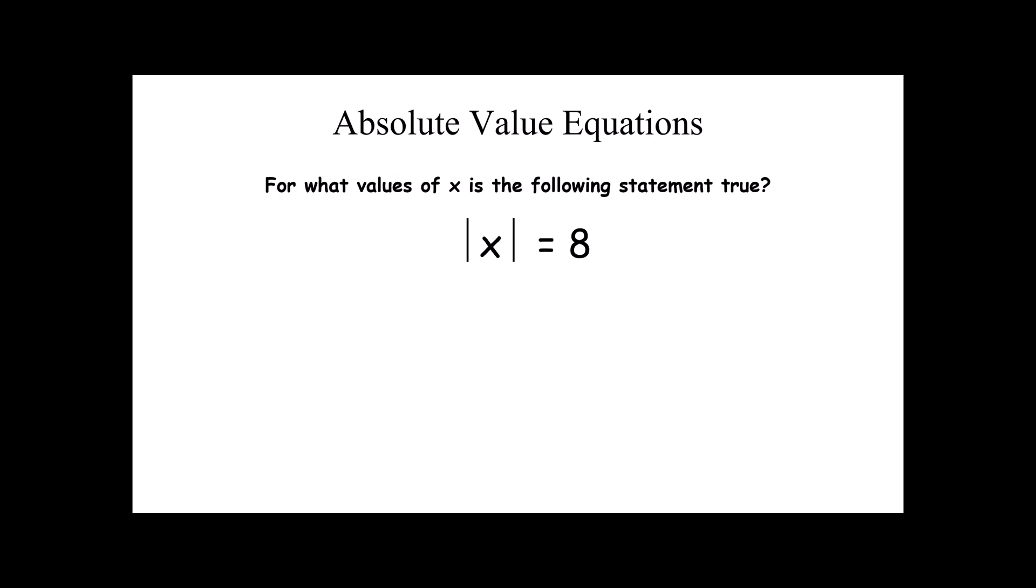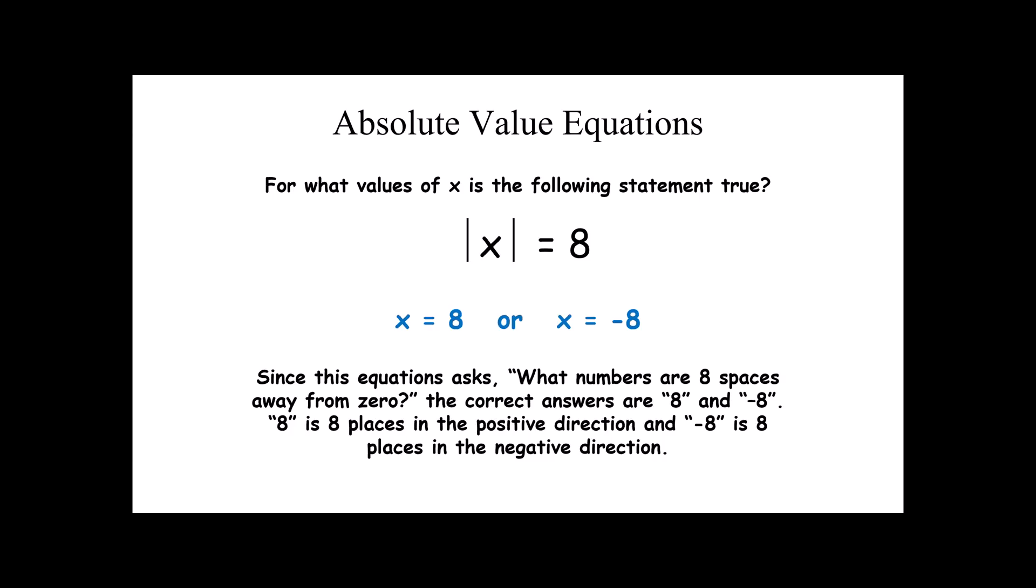If I were to ask you for what values of x is the following statement true: the absolute value of x equals 8. What I'm really saying is what numbers are 8 spaces away from zero? Hopefully you realize there's two answers: 8 and negative 8. 8 is 8 spaces in the positive direction and negative 8 is 8 spaces in the negative direction.